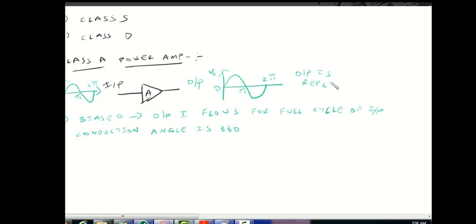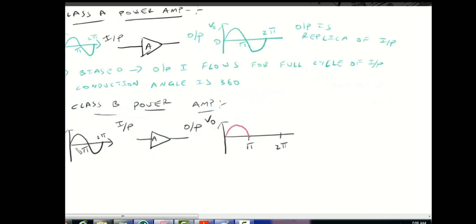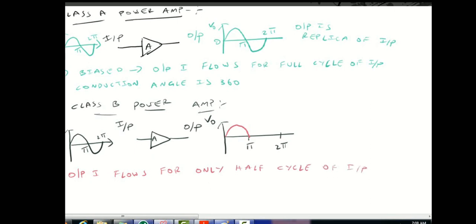Next is the Class B power amplifier. Here is the Class B biasing arrangement. The output carries only half cycle current flow — current flows for only half cycle of the input. The conduction angle is 180 degrees.